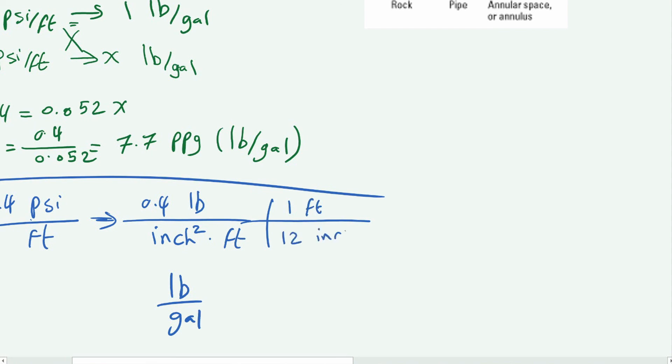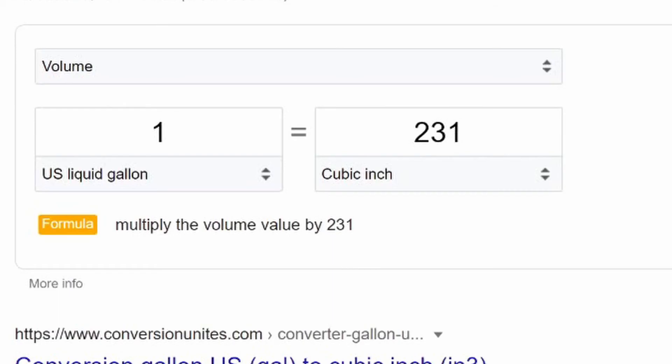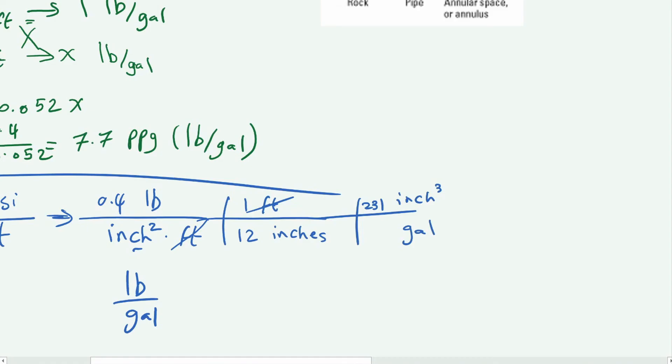Now we have our inch cubed and we want this inch cube to become gallons. How many inches are in a gallon? A gallon is 231 cubic inches. So 231 cubic inches gives you one gallon. That's it, you'll just multiply 0.4 by your 231 and you divide that by the 12 inches, and you get the same 7.7 pounds per gallon.